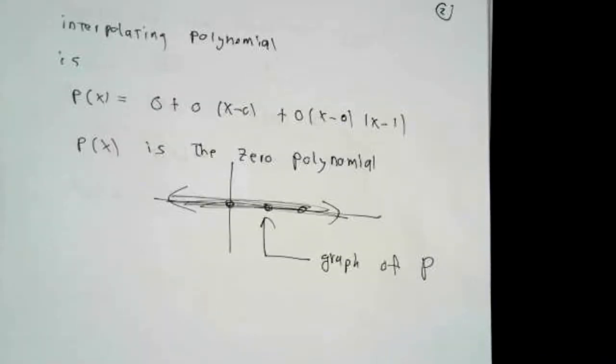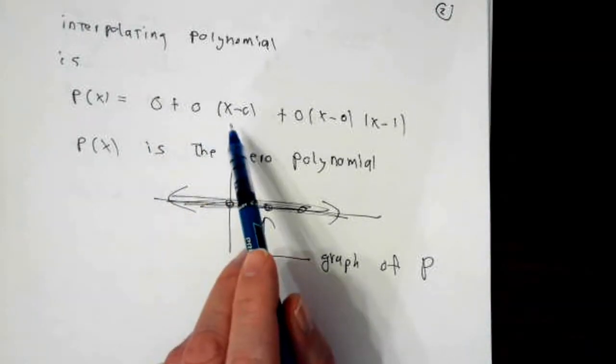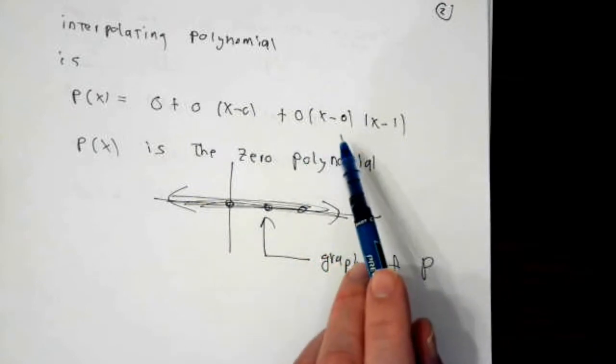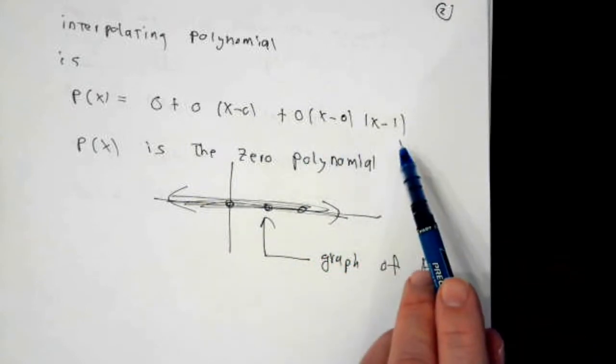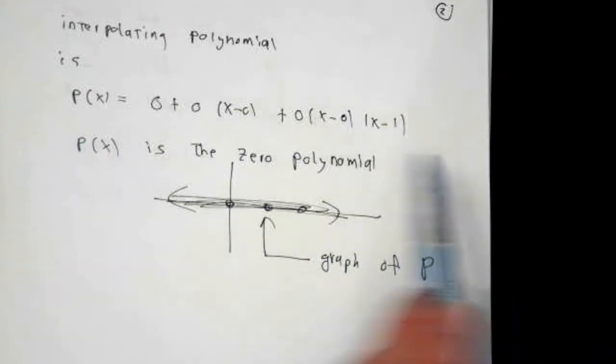What that means to me is that the interpolating polynomial using the Newton divided difference form is 0 plus 0 times x minus x number 0 times x minus x number 1. This is identically equal to 0, no matter what x is. My interpolating polynomial is, as we thought it would be, the horizontal line y equals 0.